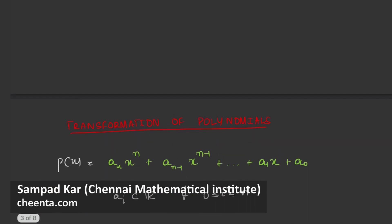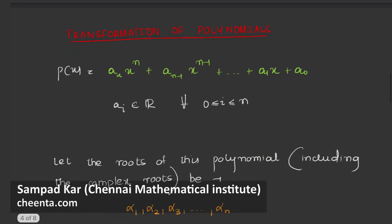So, transformation of polynomials. Suppose we are given an n-degree polynomial p of x equals a_n x to the power of n plus a_{n-1} x to the power of n minus 1 plus dot dot dot a_1 x plus a_0. Here this is a real coefficient polynomial, that is every a_i is a real number. Let the roots of this polynomial, including the complex roots, be alpha_1, alpha_2, alpha_3, dot dot dot alpha_n. As you know, an n-degree polynomial will have n complex roots.